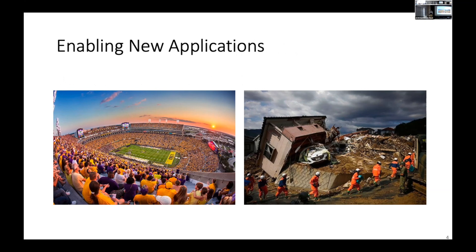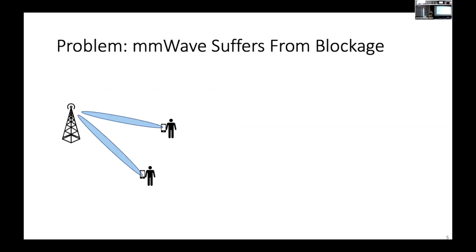Despite all the possibilities of millimeter wave, it also comes with many challenges. The previous presenters have already mentioned a number of them. One of the biggest problems with millimeter wave is signal blockage. Because it operates at a very high frequency, the signal is very directional and narrow, making it very easily blocked by obstacles. For example, a crowd of people standing in the transmission path between the base station and the user device causes significant human body attenuation and performance degradation.